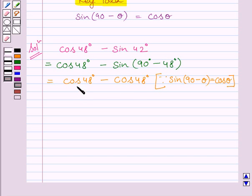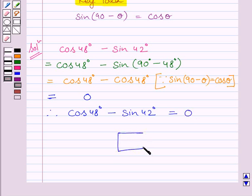cos 48 degrees minus cos 48 degrees is equal to 0. So we get cos 48 degrees minus sin 42 degrees is equal to 0. 0 is our required answer.